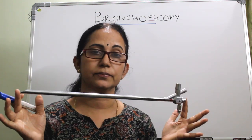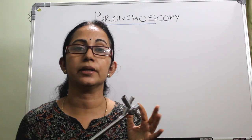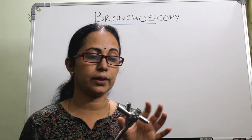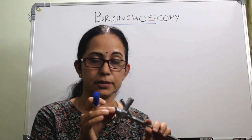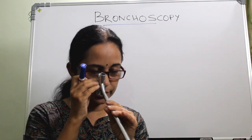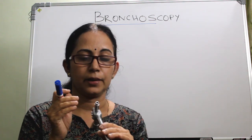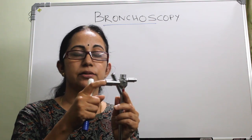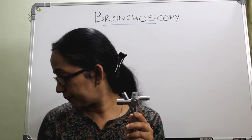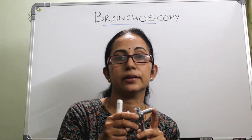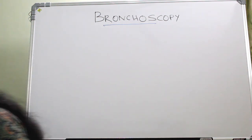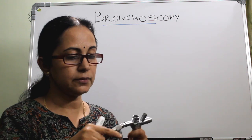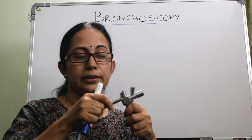This is a rigid bronchoscope and you should be familiar with its parts. It has got an eyepiece to look into, a suction port, a ventilation port, and a connection for the light carrier, which is connected like this.